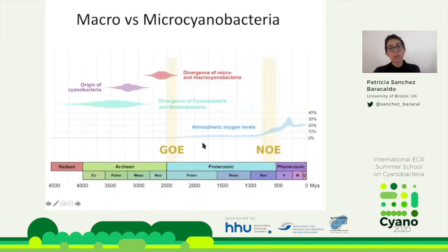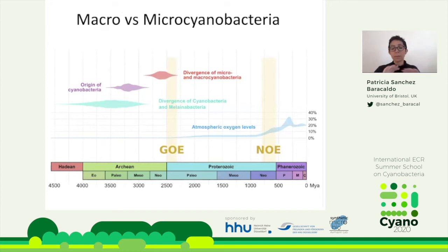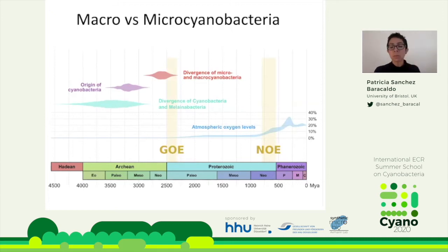The macrocyanobacteria have big cell diameters from about 3 up to 50 microns — really huge cells. Well-known groups like Microcystis, Trichodesmium, and traditional microbial mat organisms are all here. In the microsyanobacteria group we have small cell diameter organisms like Synechococcus and Prochlorococcus. The divergence of the macro- and microsyanobacteria coincides with the Great Oxygenation Event, and my interpretation is that something is really going on with the morphology and ecology — these organisms are starting to radiate into different habitats, from land to marine environments.